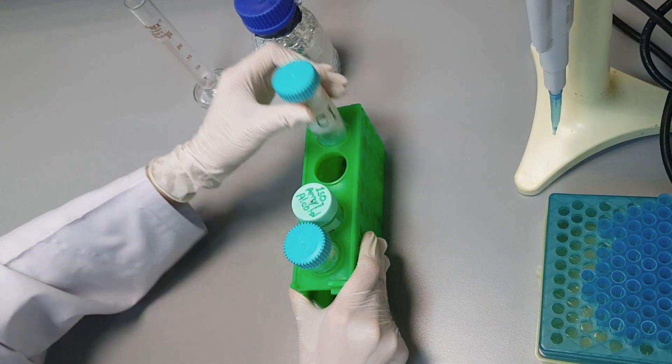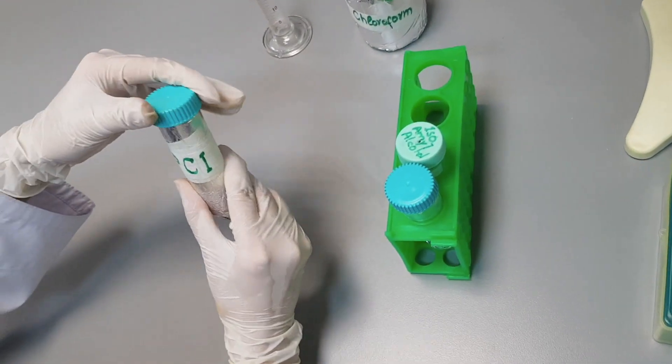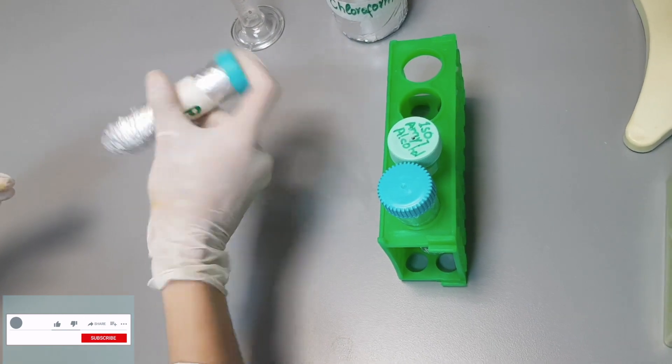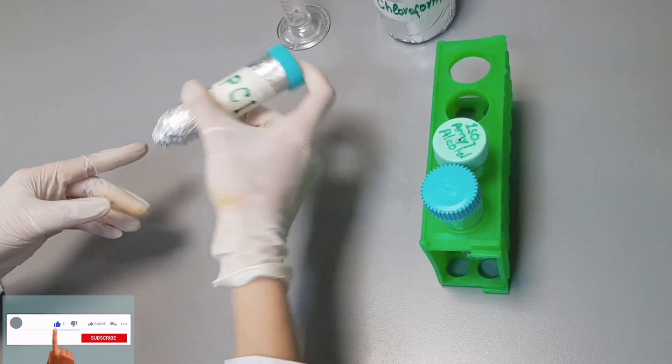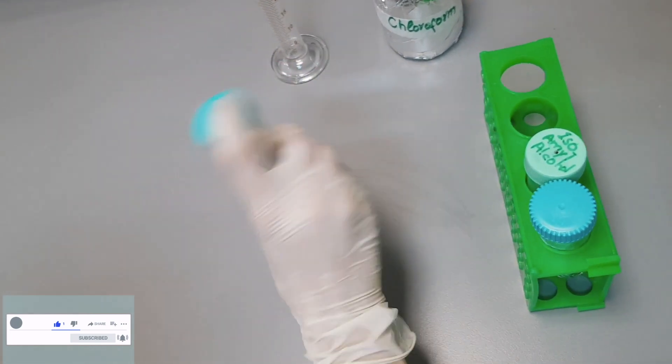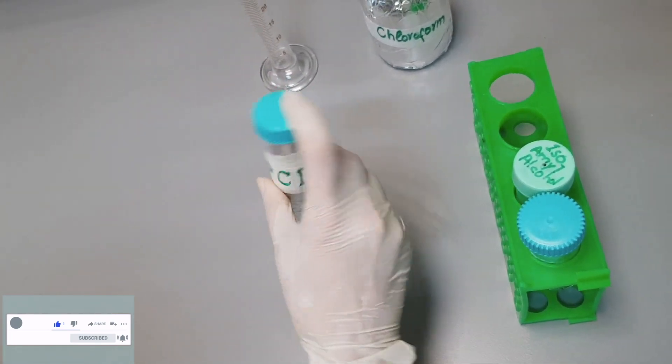As phenol and chloroform are light sensitive, wrap this tube with aluminum foil. Plus, don't forget to prepare this solution in a light-free environment. Mix the solution thoroughly and leave it overnight.